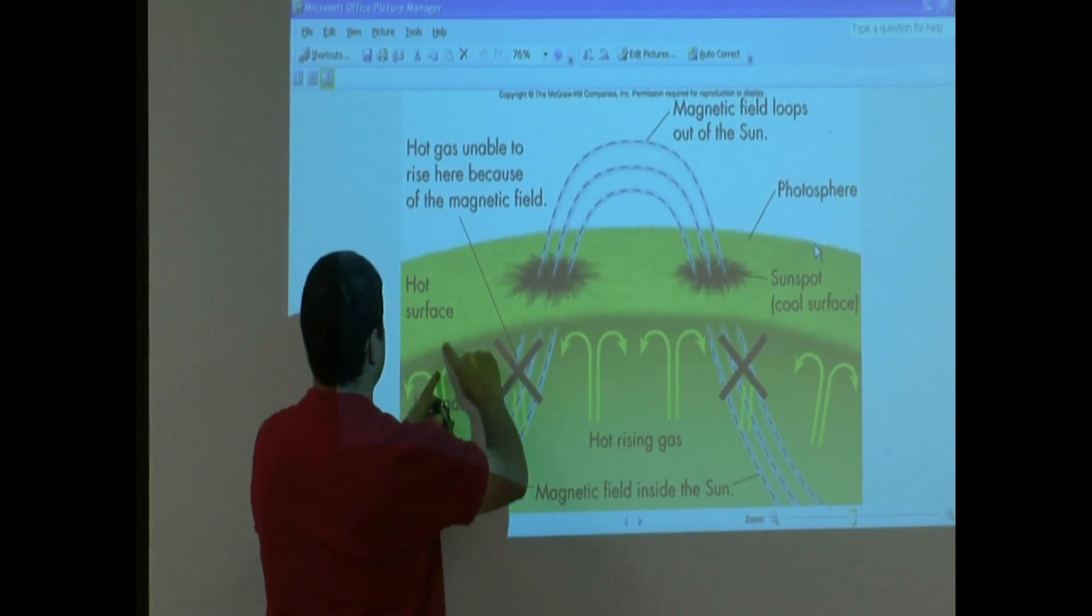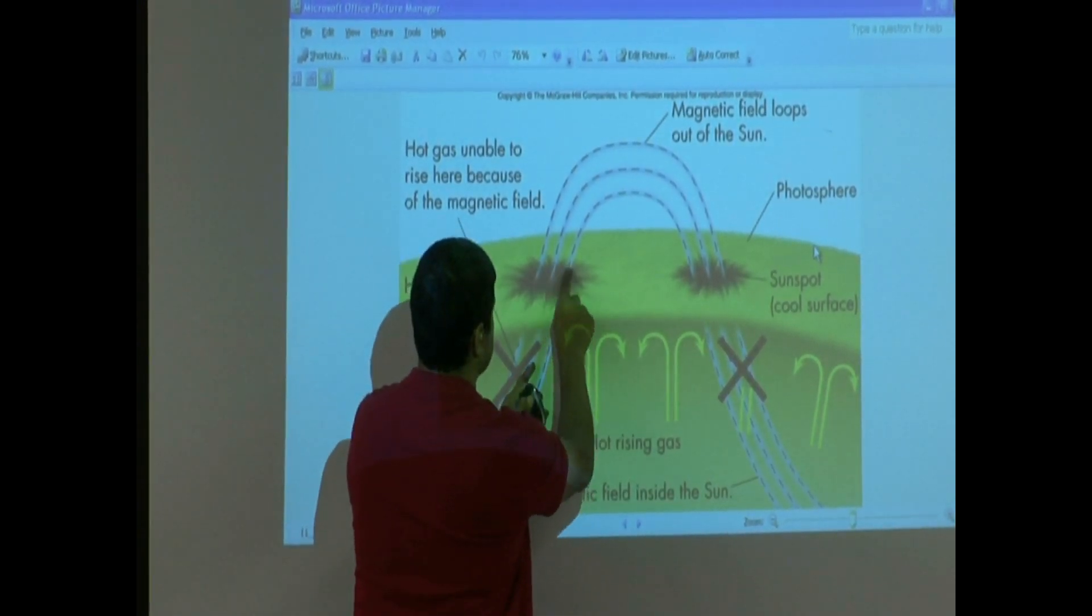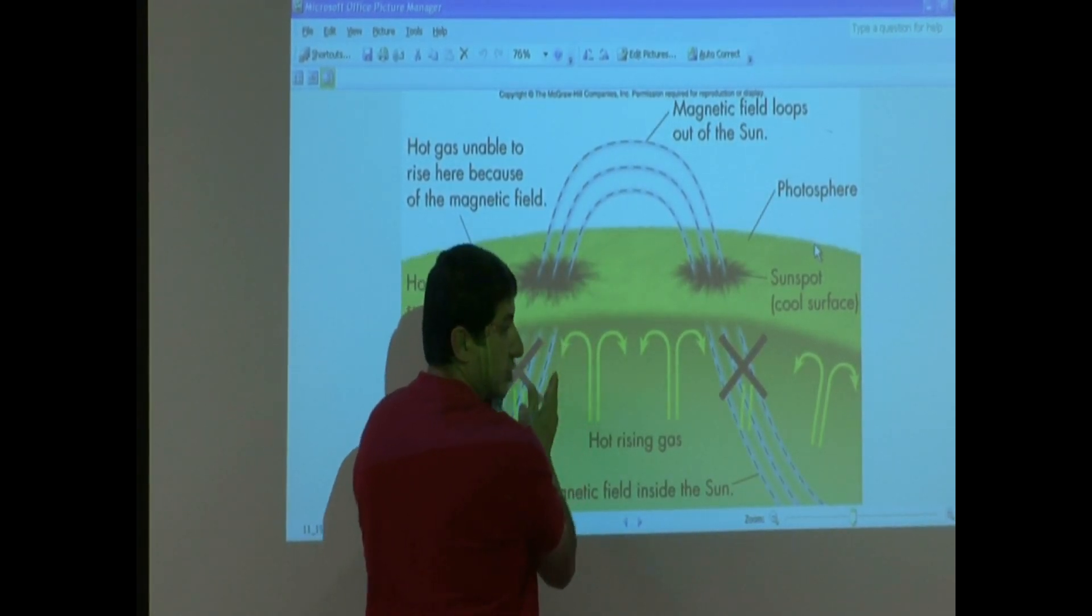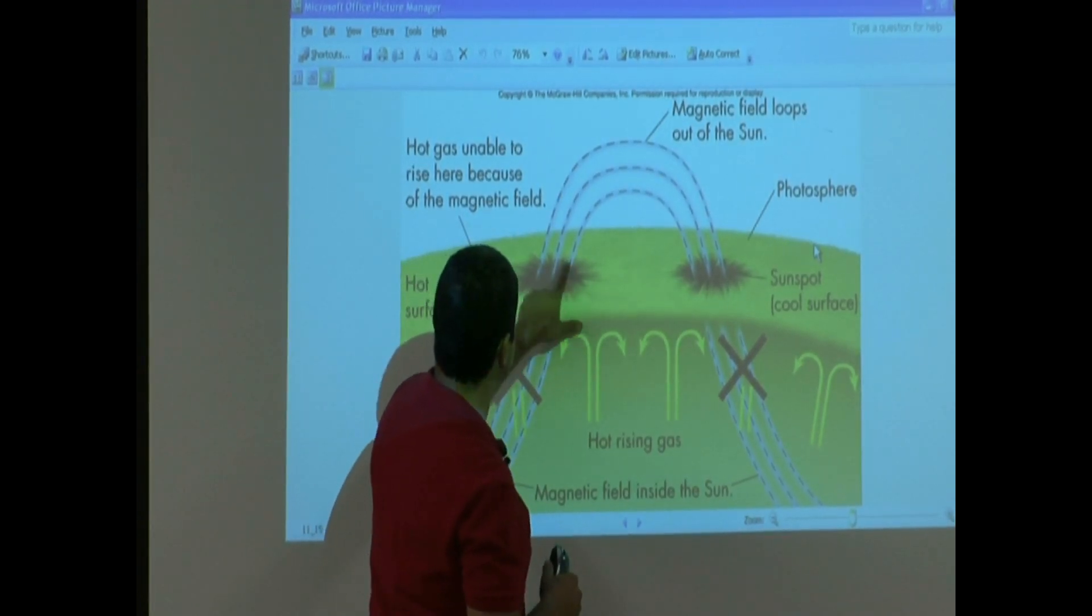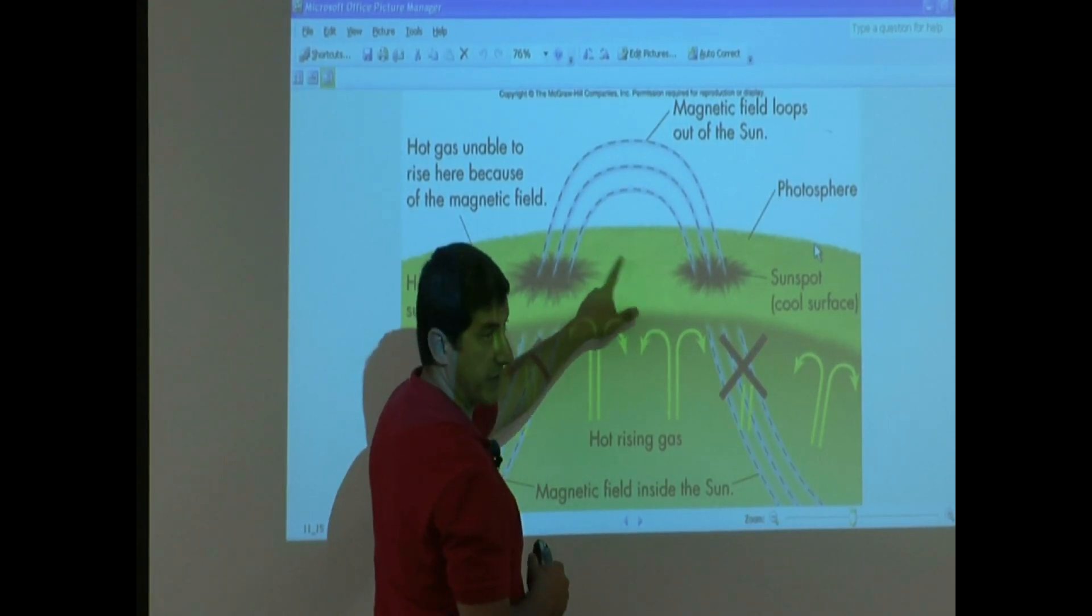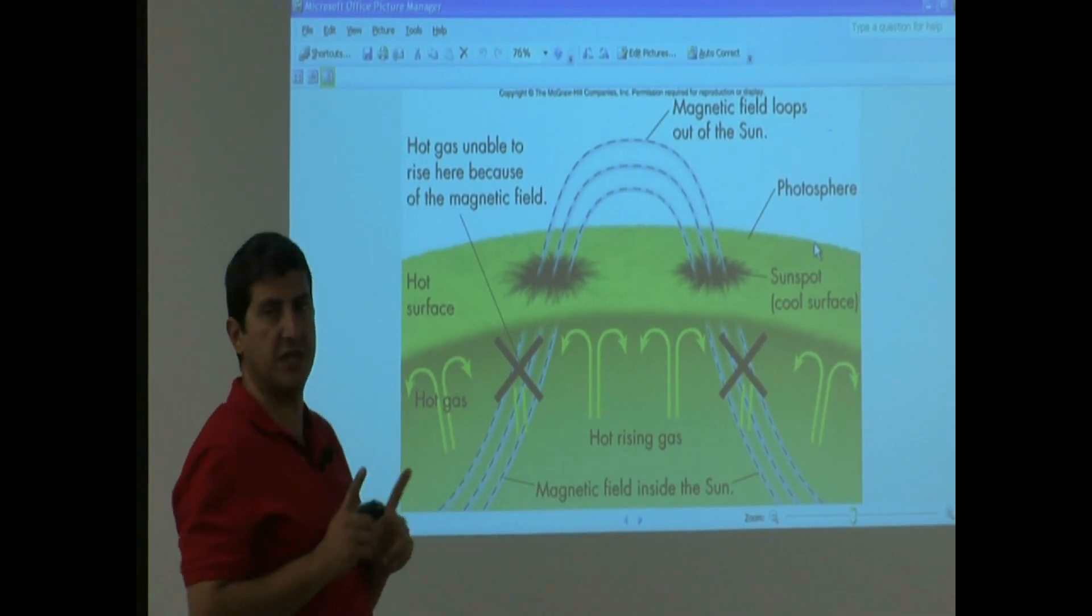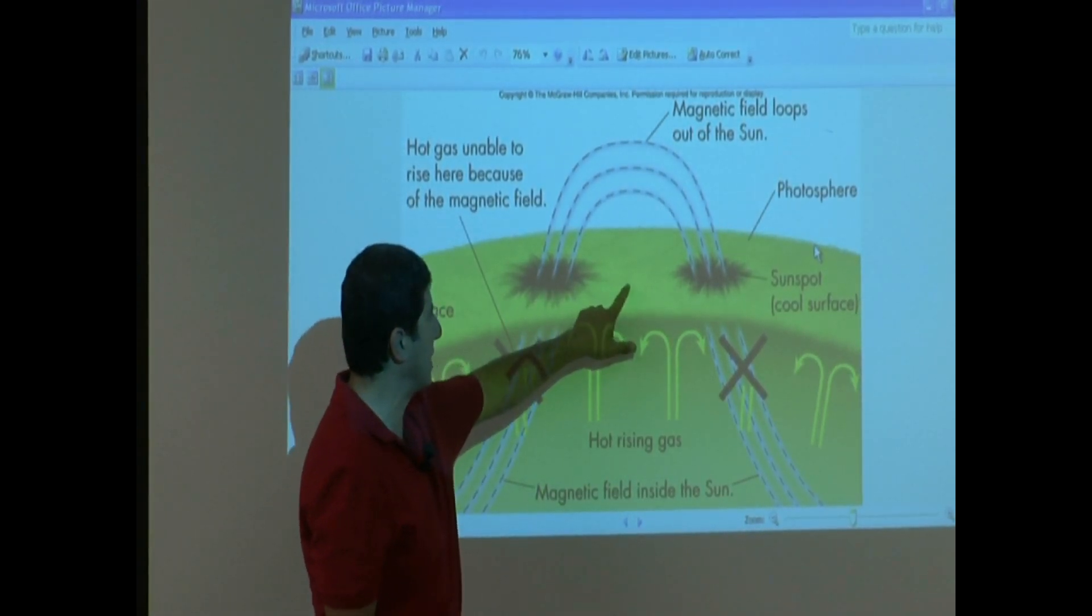So here, the hot gas is going to be able to rise all the way to the top and come back down. Here, the hot gas is not going to be able to rise all the way up. The magnetic field is like blocking it. So what is that going to cause? This sunspot is going to be cooler than its surrounding in comparison because the hot gas is prevented from rising. So that's one of the things we should expect. We should expect the sunspot to be cooler than its surrounding.